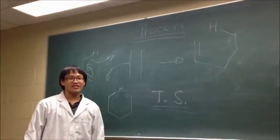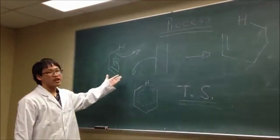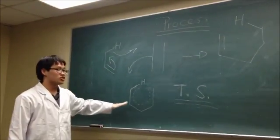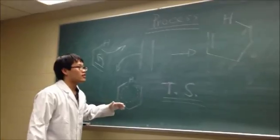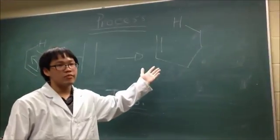In the reaction process, the electrons are moving around the circle and make this transition state. And thus, a pentene is formed.